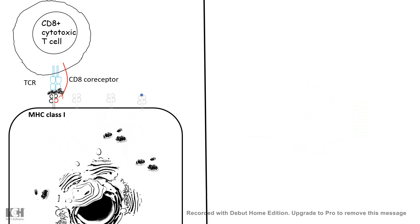Now let's talk about how class 1 and class 2 MHC molecules present their antigens. Class 1 MHC molecules are present in almost all nucleated cells.